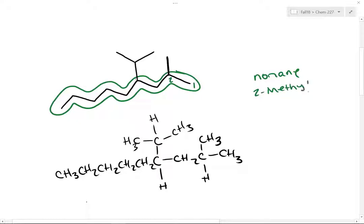Here is the skeletal structure at the top and then with some of the bonds drawn out. So 1, 2, 3, 4, 5, 6, 7, 8, 9. And continuing: 3, 4, 5, 6, 7, 8, 9.